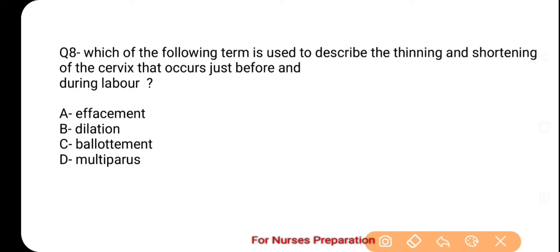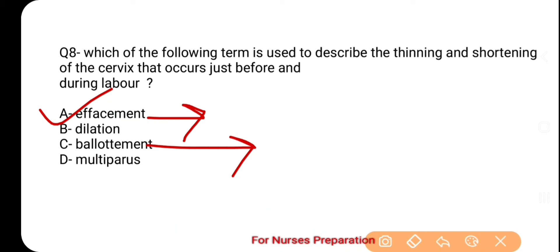Question number 8 is: which of the following terms is used to describe the thinning and shortening of the cervix that occurs just before and during labor? Options हैं — A. Effacement, B. Dilation, C. Ballottement, D. Multiparous. The correct option is A, which is Effacement. Effacement का मतलब होता है प्रसव के दौरान cervix का विस्तारित हो जाना। Ballottement का मतलब होता है शरीर में तैरती किसी वस्तु का पता लगाने वाली परीक्षण की विधि, जो विशेषकर pregnancy का पता लगाने के लिए उपयोग में ली जाती है।